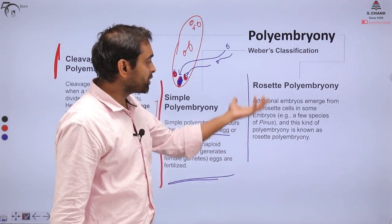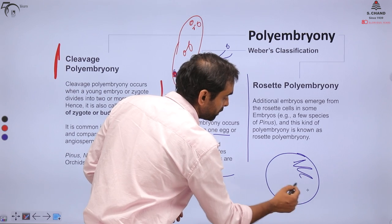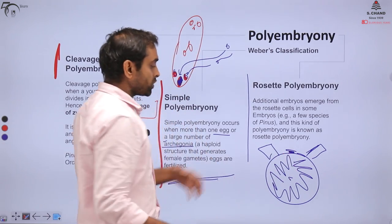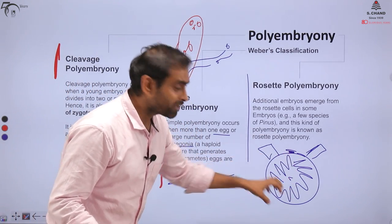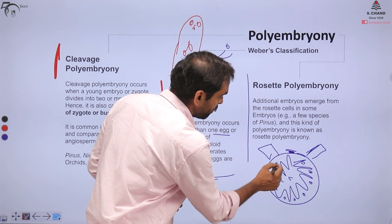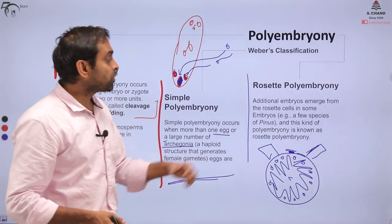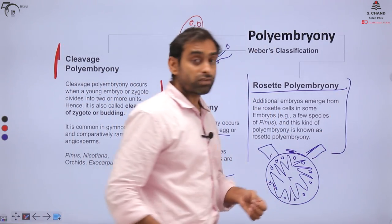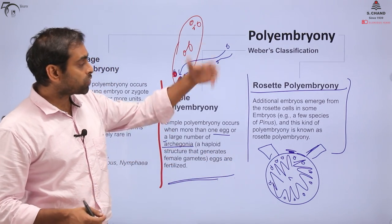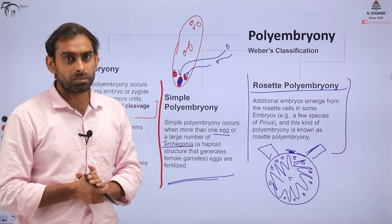The third type is Rosette Polyembryony, named based on the appearance and arrangement of the embryos — a rosette shape. If polyembryony develops in this rosette arrangement it is called Rosette Polyembryony. This is generally seen in citrus fruits. Almost all pines and gymnosperms are also known to have polyembryony of this type.